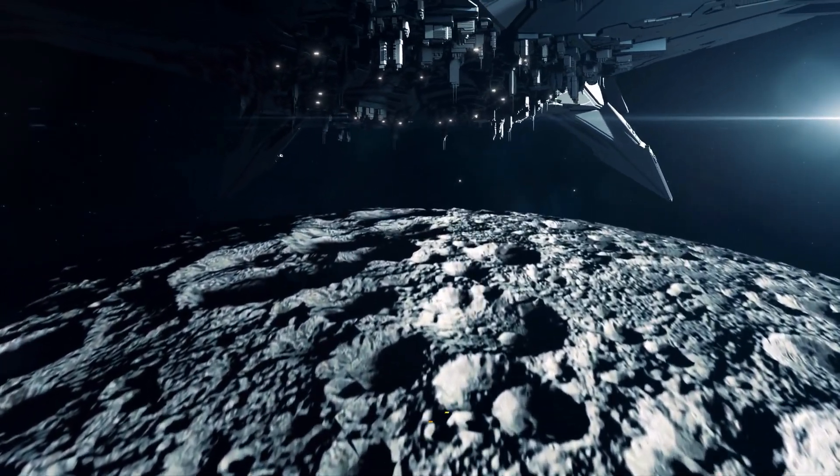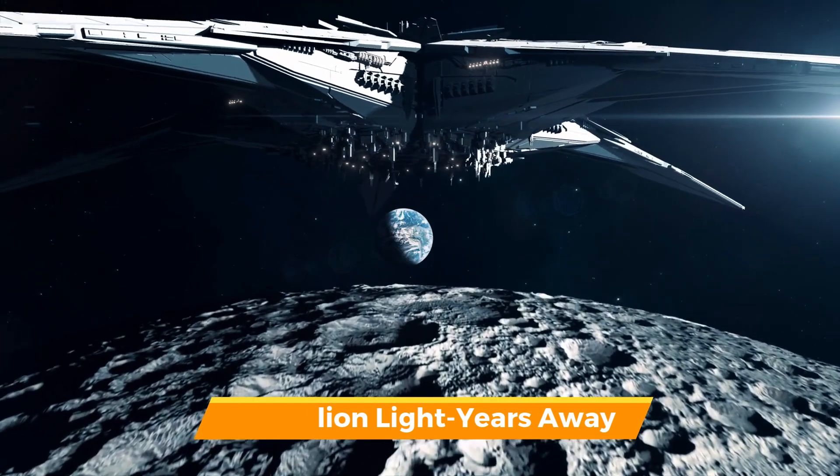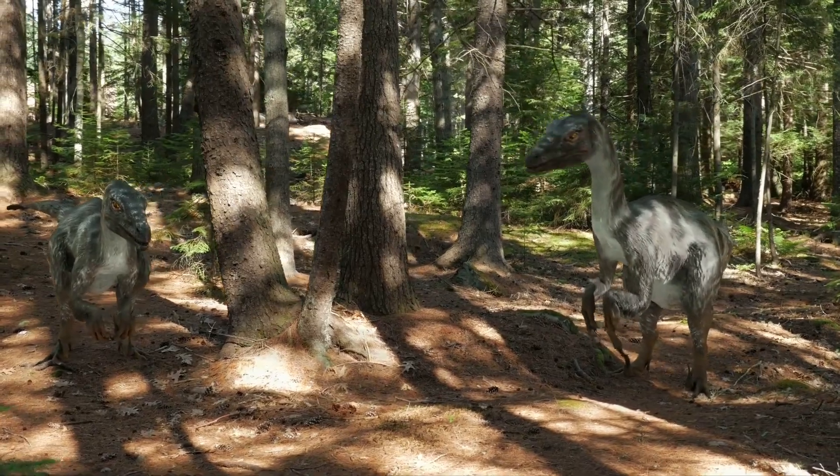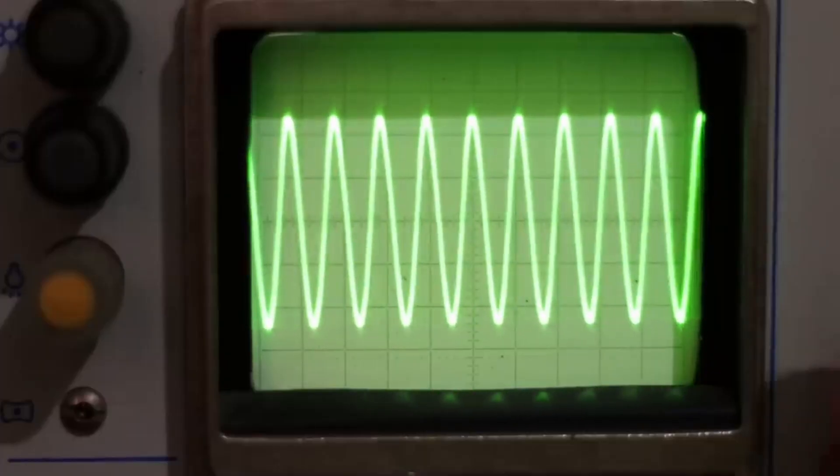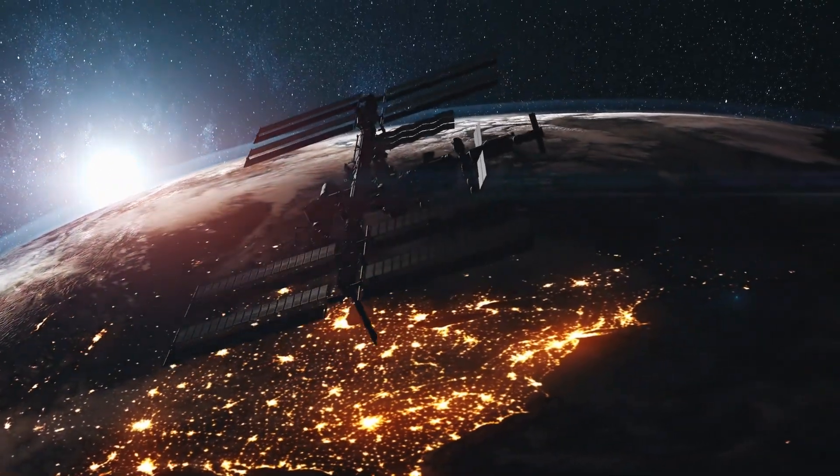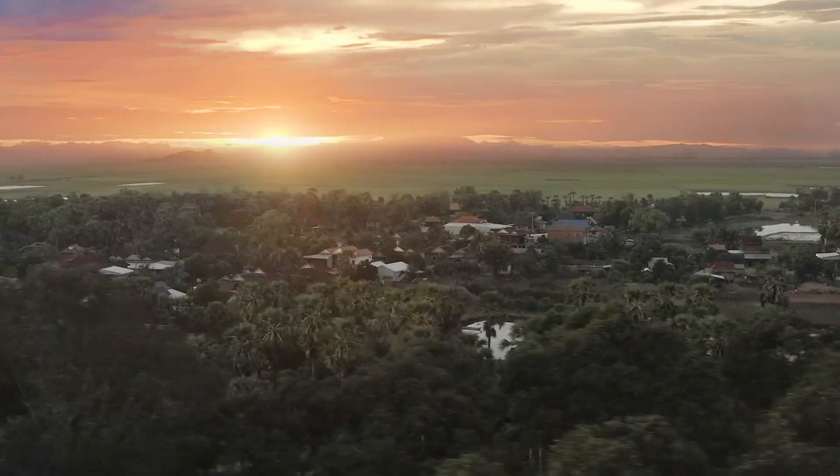Imagine a scenario where an alien civilization situated 65 million light years away is observing Earth. They would be witnessing our planet as it existed during the dinosaur era. However, they would not be able to hear any radio signals from us.